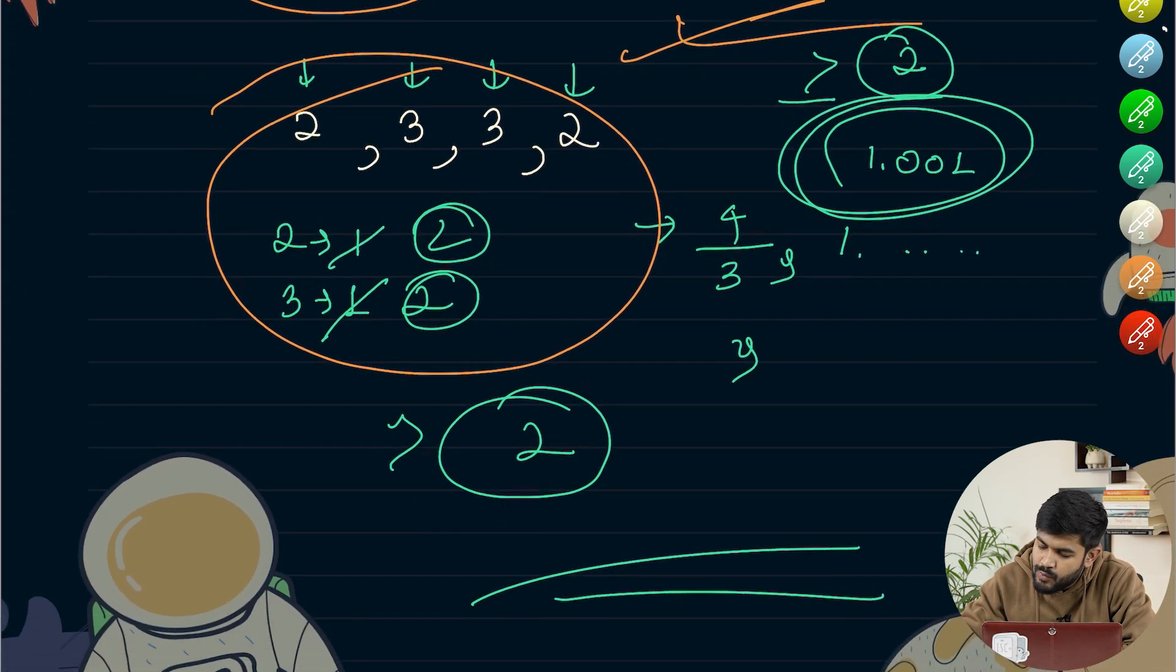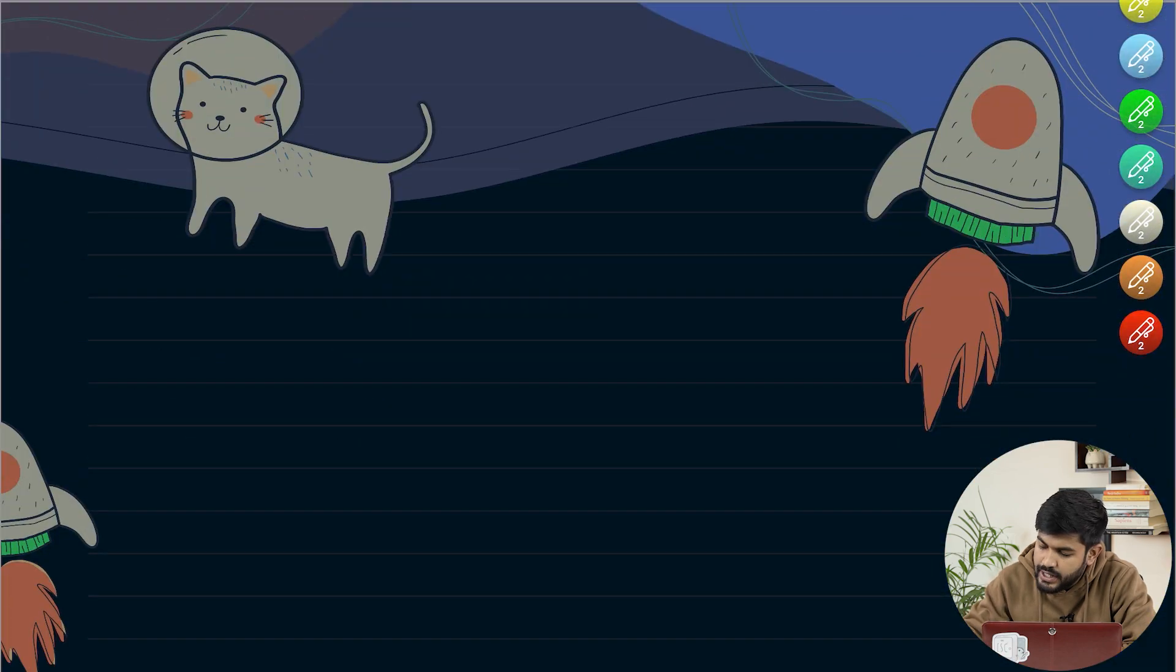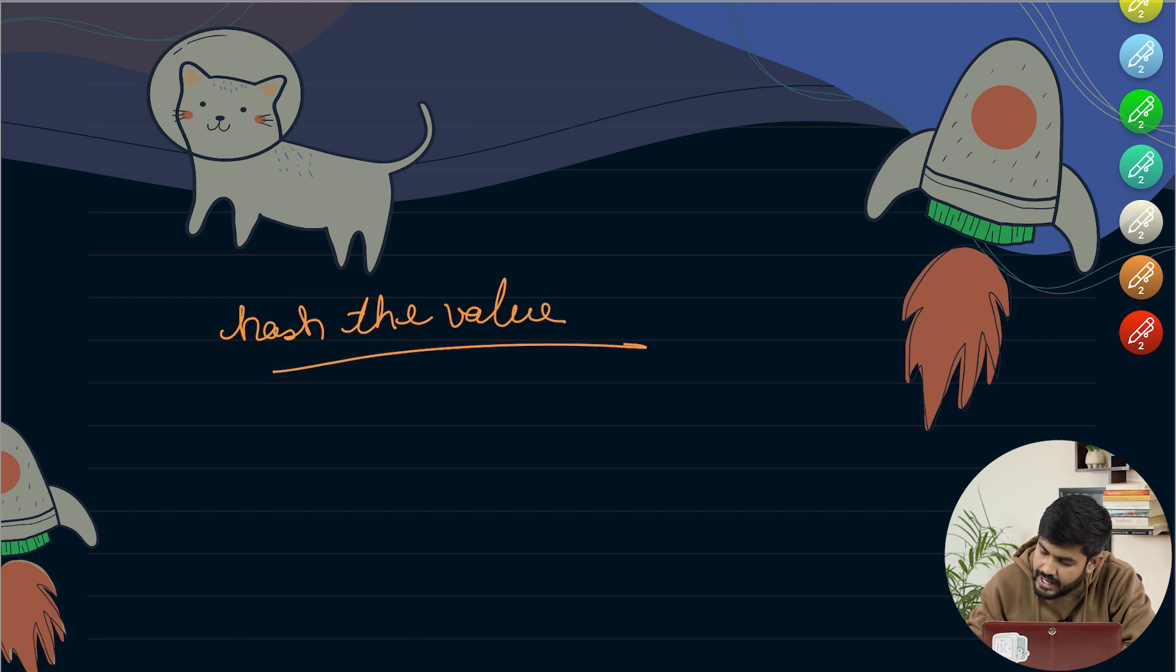So basically the point is, the point of concern is we need to hash the values. Hash the values.